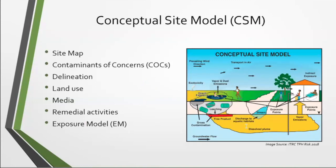The conceptual site model, or CSM, in ND RBCA is the heart of the storytelling of the site — all of the site characterization can be summed up in the CSM. Key elements include a site map showing property boundaries, contaminants of concern (COCs), their source and release scenario, spatial and temporal distribution of COCs, delineation of contamination, current and future land use, media potentially impacted — soil, groundwater, surface water, air, indoor air — and representative concentrations of the contaminant.